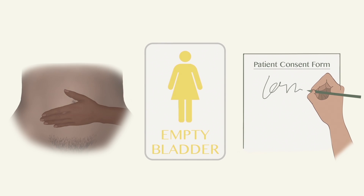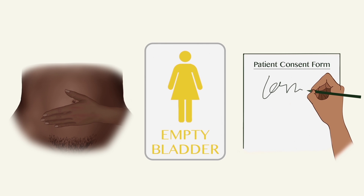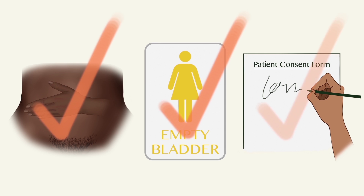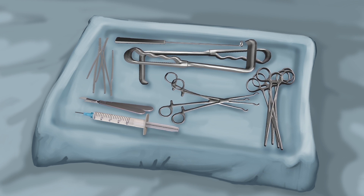Before starting the procedure, make sure the client has washed her abdomen and genitals, her bladder is voided, and her consent forms are signed. Make sure the sterile instrument tray and the sterile field are prepared.